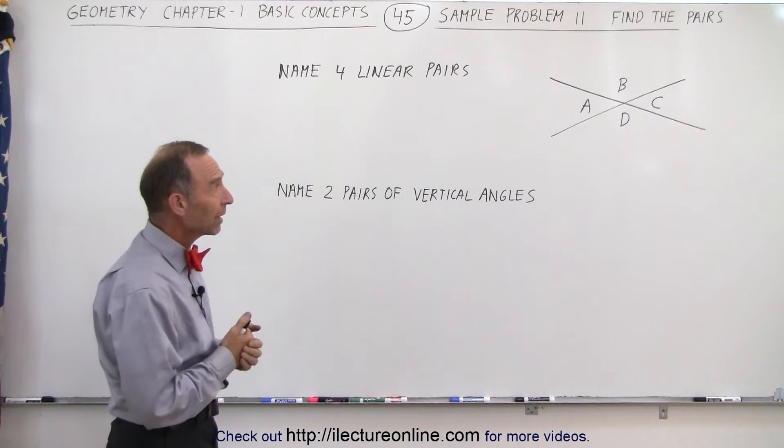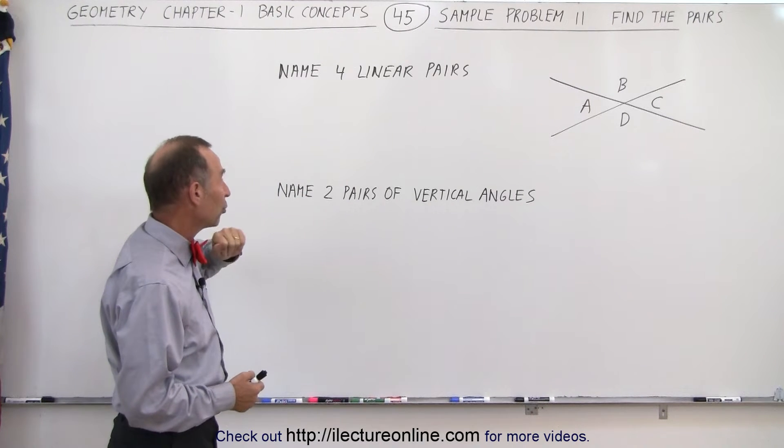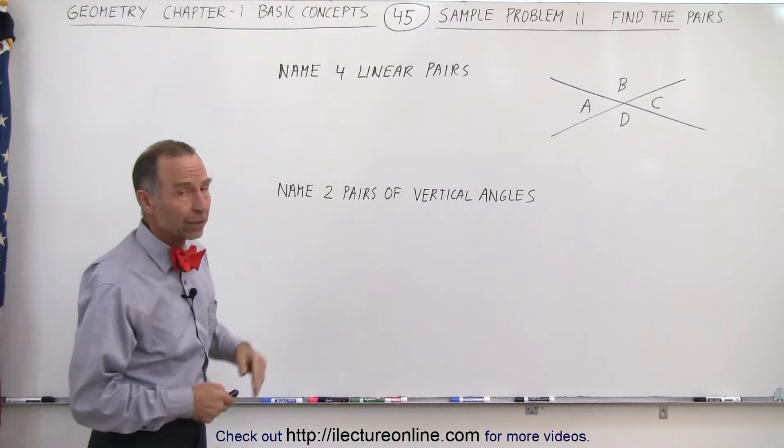So based upon what they gave us, which ones are linear pairs - they claim there's four of them - and which ones are pairs of vertical angles.